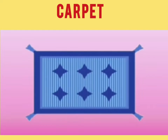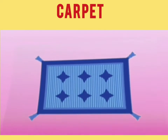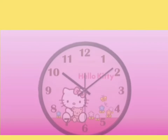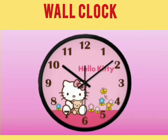Carpet. This is a carpet and we spread carpet on the floor in the living room. Now let's see the next picture. Wall clock. This is a wall clock and we hang it on the wall to see the time.